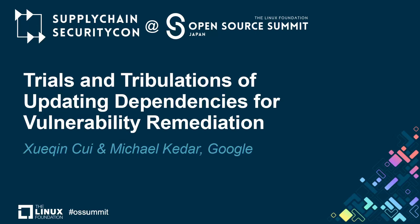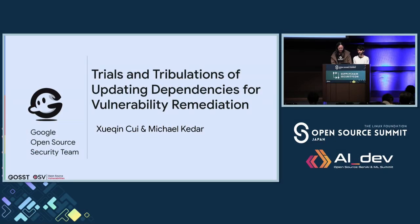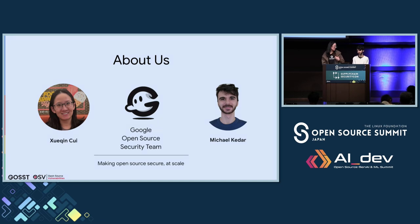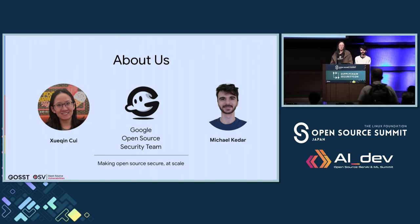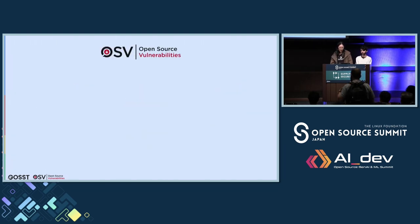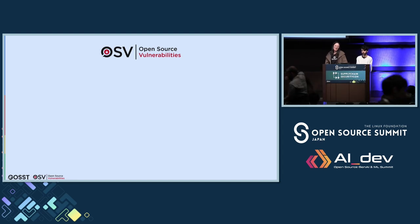Hello everyone. Thank you all for coming to our presentation. My name is Xueqing, and I am Michael. We are software engineers from Google Open Source Security Team with the goal of making open source secure at scale. We work on a group of projects labeled OSV, or Open Source Vulnerabilities, which helps open source developers manage and fix vulnerabilities in their dependencies.